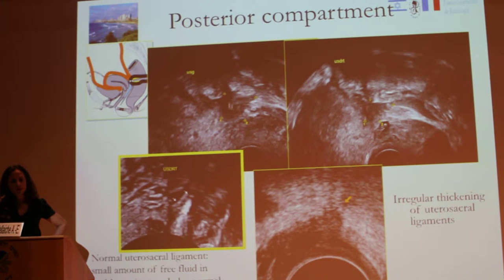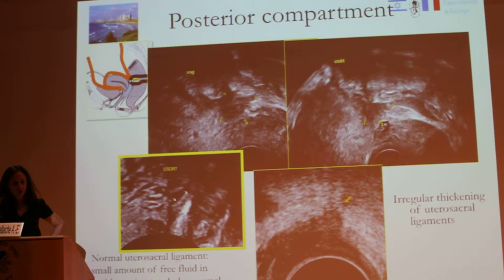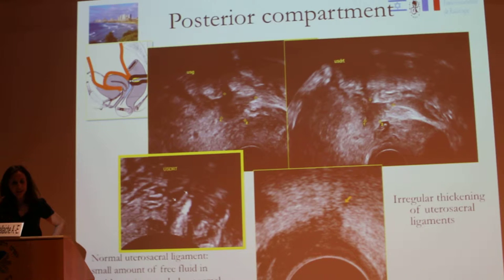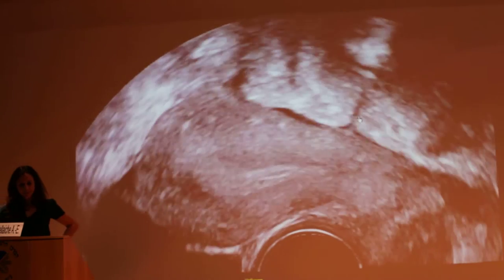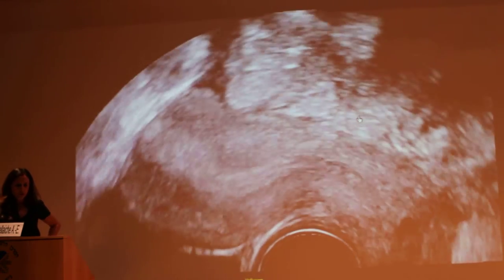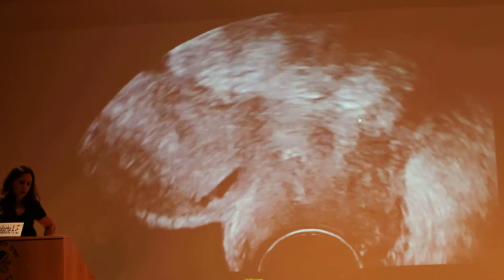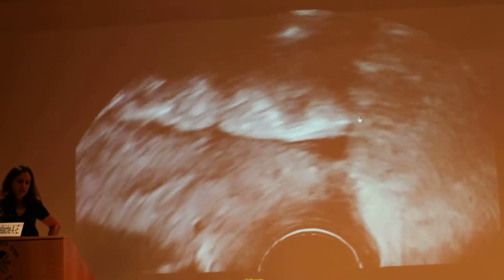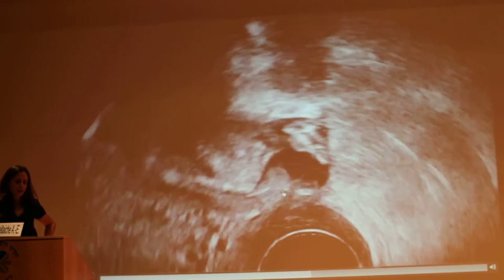It is the uterosacral ligaments which are involved by the pathology. Here is an example — a normal uterosacral ligament. When the uterosacral ligament is involved, you have this pattern of pathology with irregular borders, like you see here on this slide.